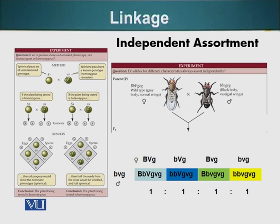The normal wings would be capital V, small vg. The abbreviation for normal wings is capital V, small vg. And for the vestigial wings, which are non-functional, it is small v with a g.